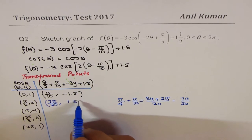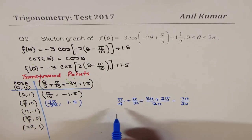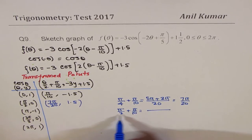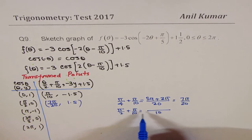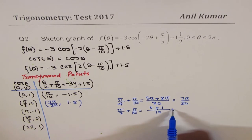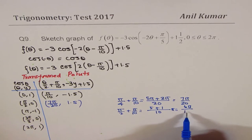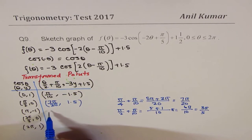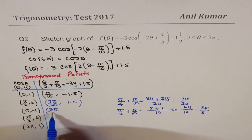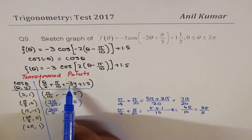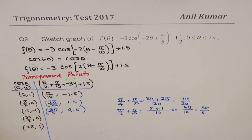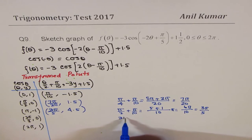For θ = π: half of π is π/2, plus π/10 gives a common denominator of 10, so 5π/10 + π/10 = 6π/10 = 3π/5. The y-value is -3 × (-1) + 1.5 = 3 + 1.5 = 4.5, which is the maximum. So the third image point is (3π/5, 4.5).